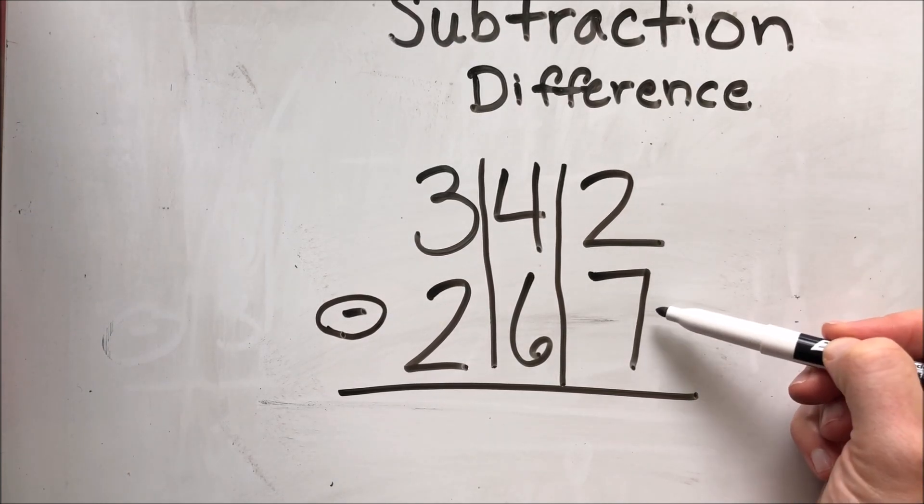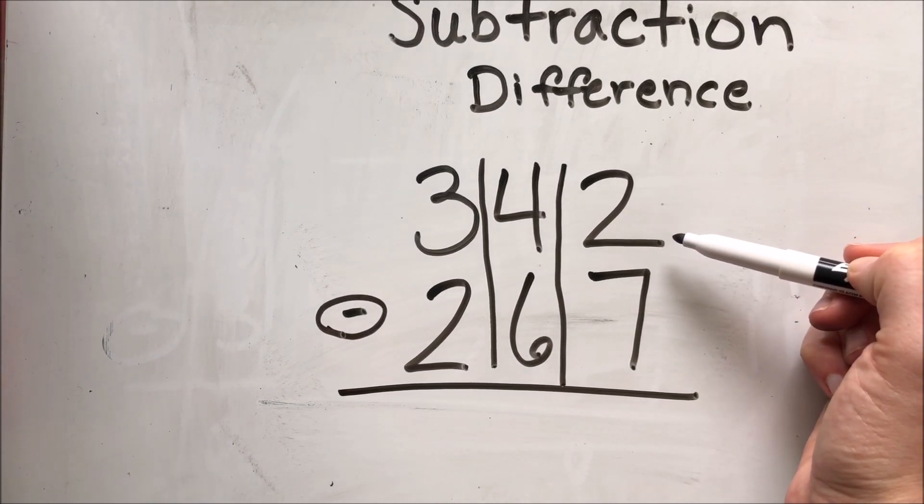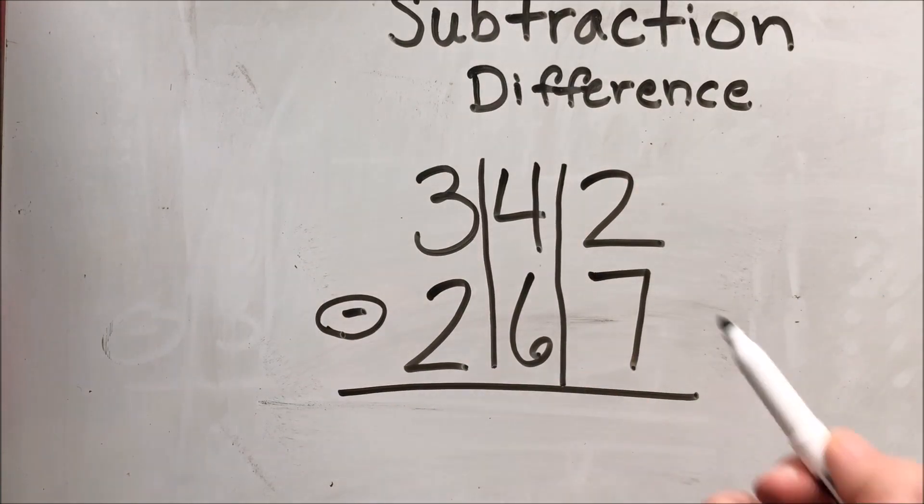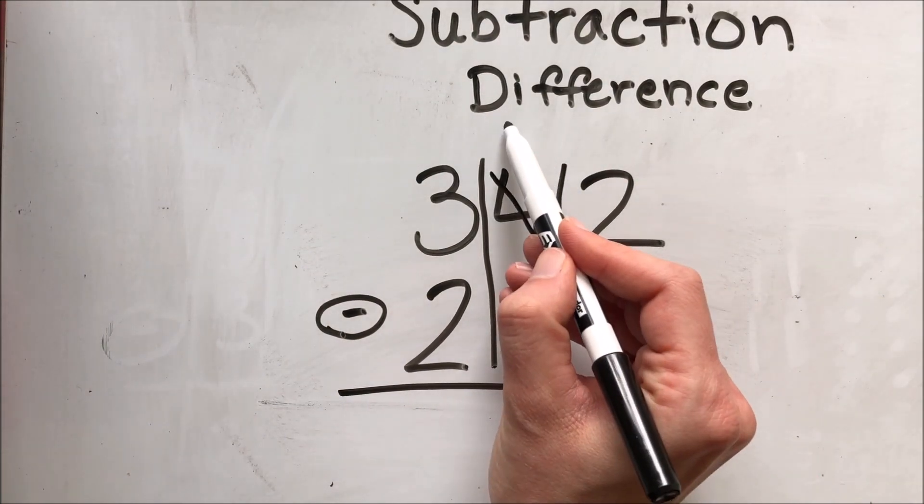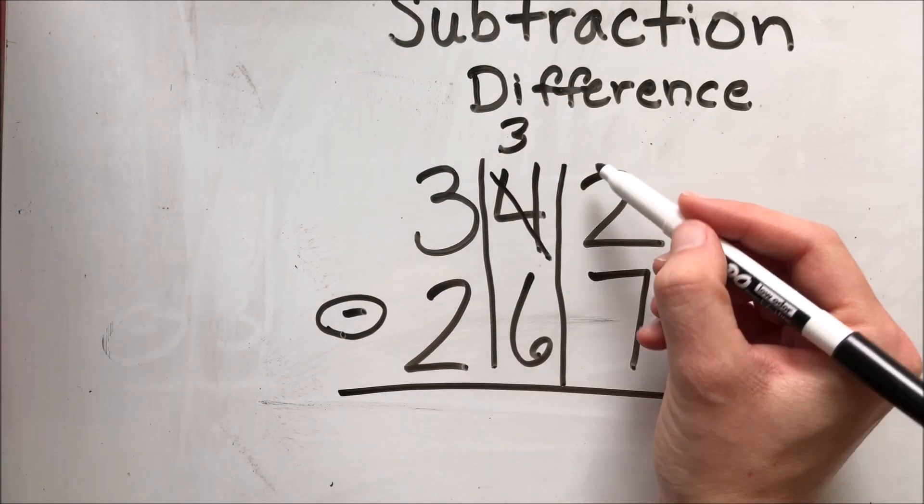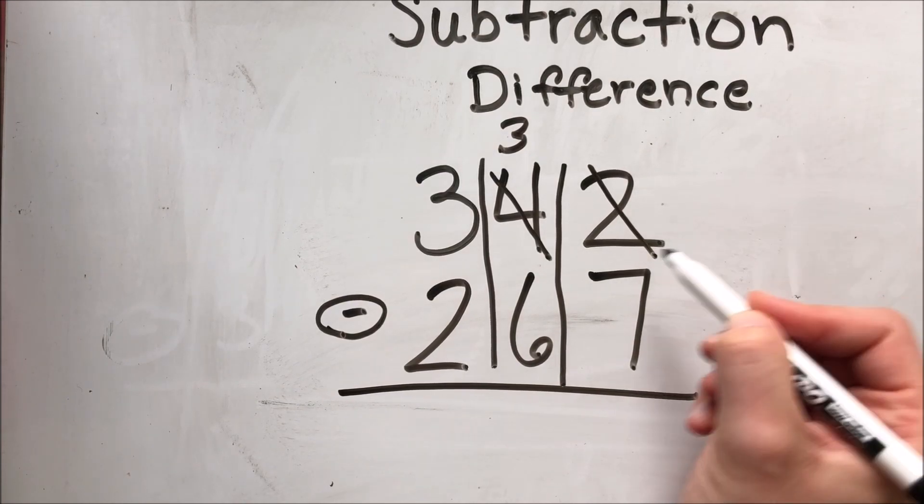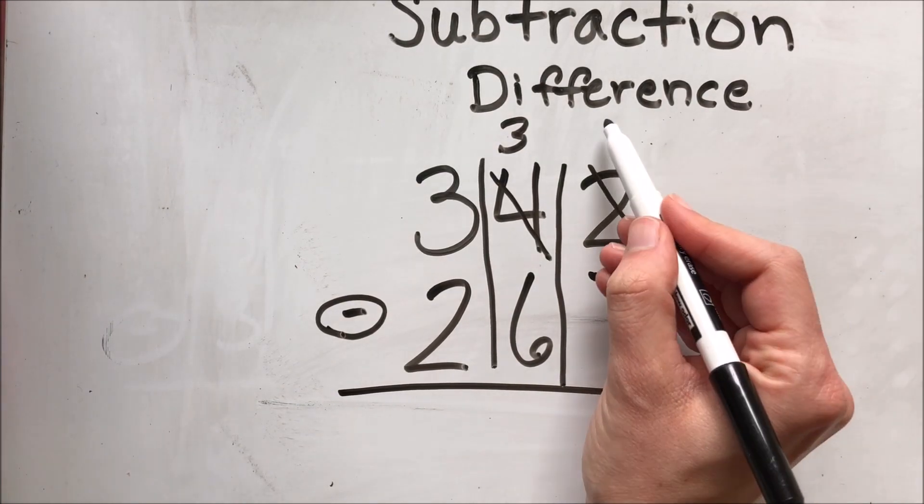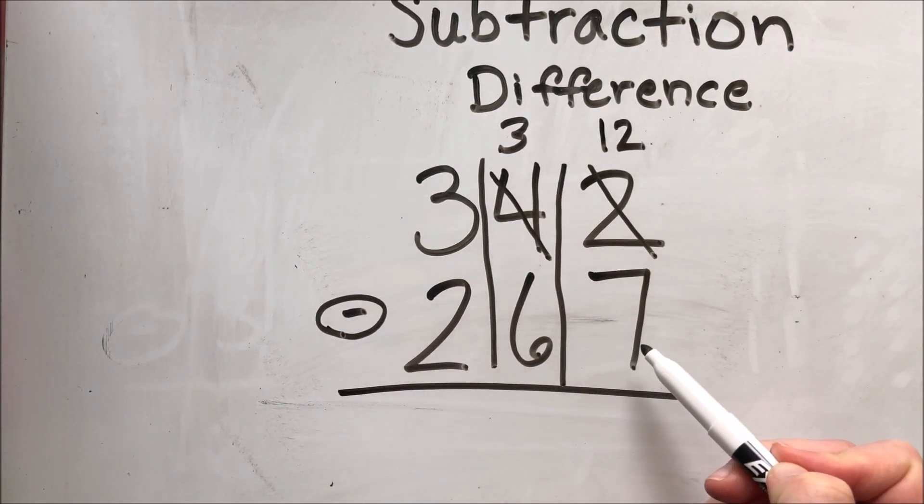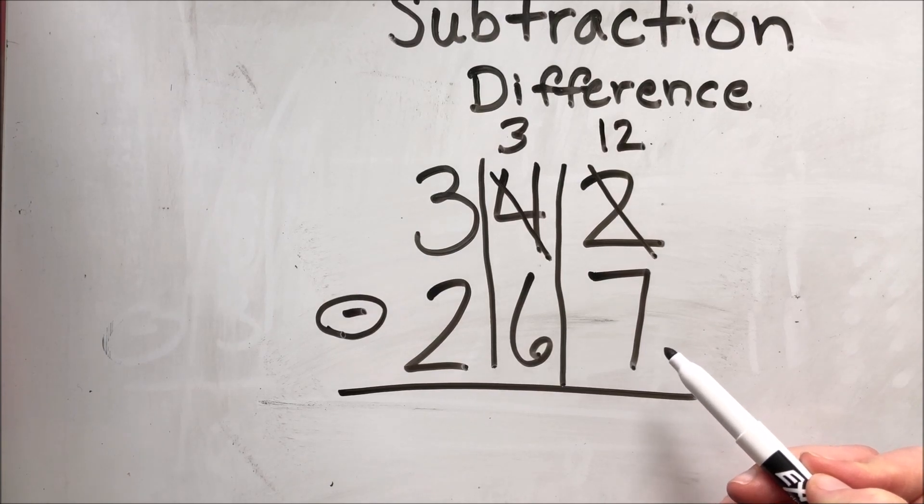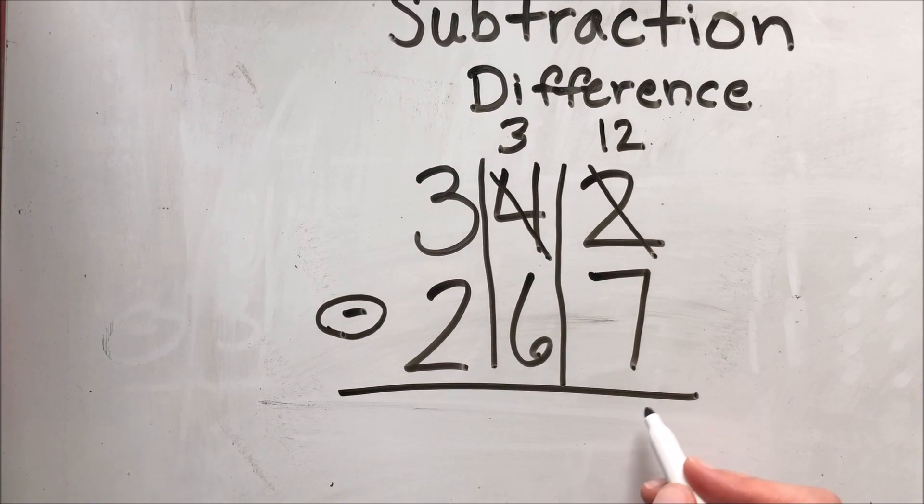I have two minus seven. I can't take away seven if I only have two. So I'm going to need to go get more tens or one more ten. So I'm going to come over here to my tens place. I'm going to take one of my tens. So now I have three and I'm going to add 10 more to my two. So I have two ones. I'm adding 10 more to it. Now I have 12 ones. I'm going to do 12 minus seven. If I'm not sure, I can use a strategy like using my fingers. I can draw a picture. Or if I know my fact, 12 minus seven is five.